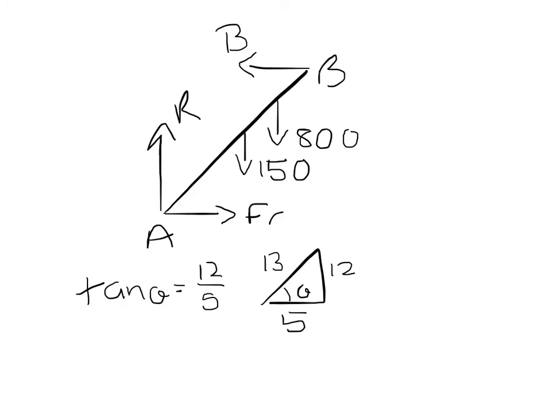Using Pythagoras I have a hypotenuse of 13 which gives me that sin theta is 12 over 13 and cos theta is 5 over 13.